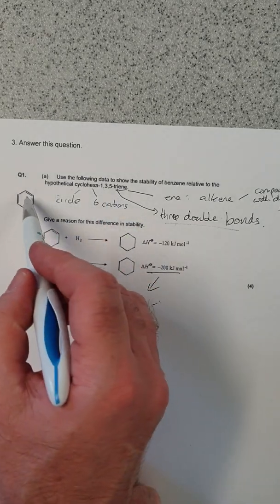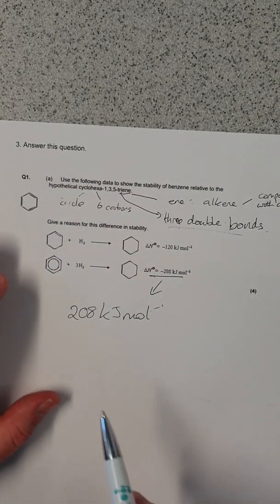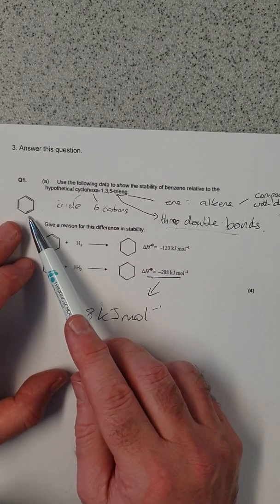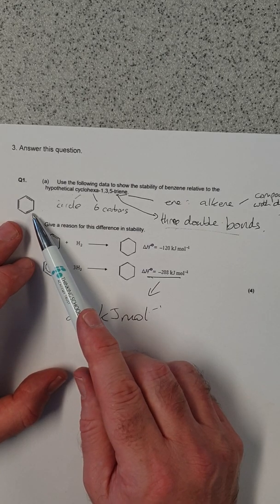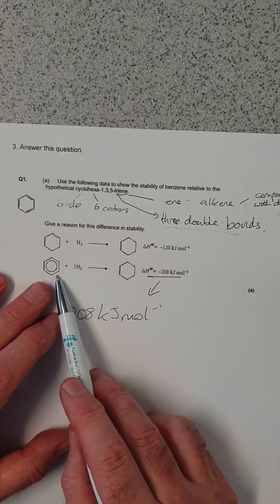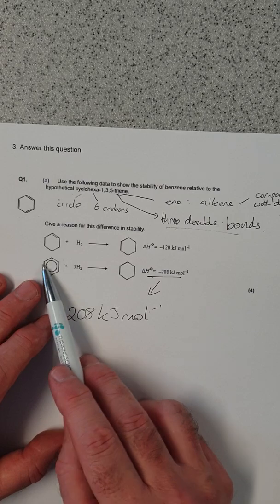So this is the diagram showing us this hypothetical molecule. And remember, this is what was originally proposed for the structure of benzene. This is what we know benzene is like with the delocalized electrons.